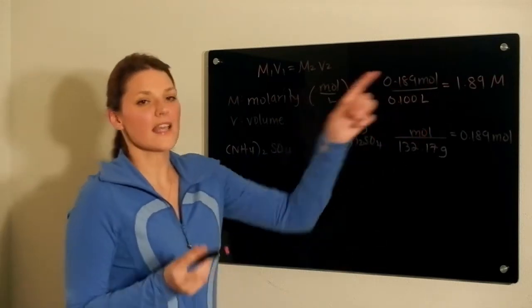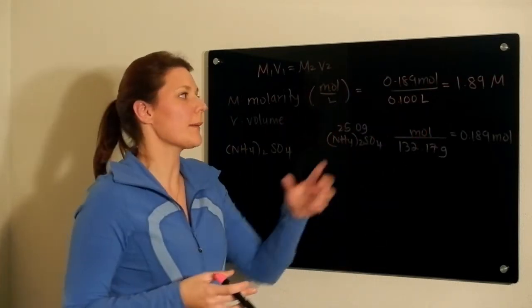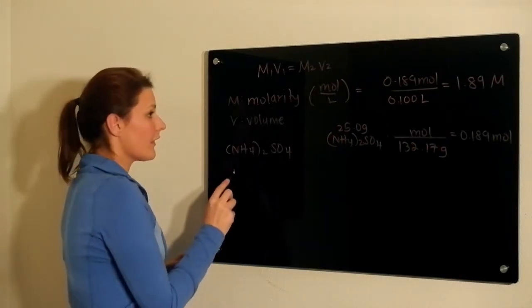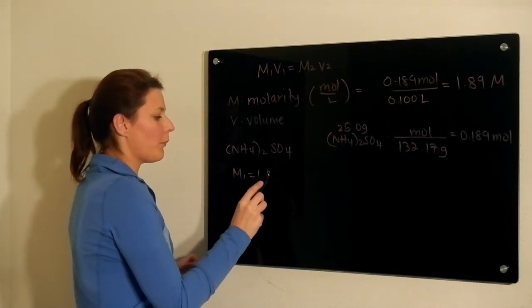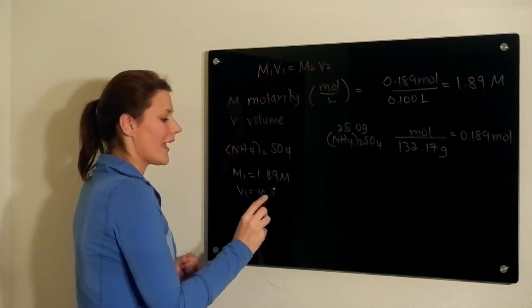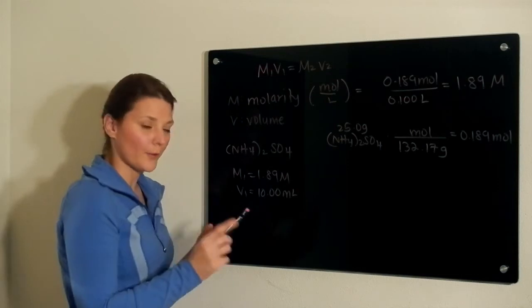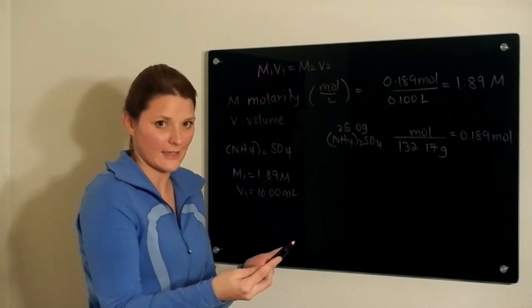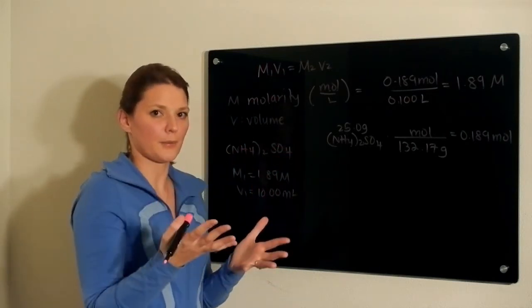We then take a 10 milliliter sample of this solution and dilute that one down, which means that M1 is equal to 1.89 molar and V1 is equal to 10 milliliters. Remember, we're taking 10 milliliters of the original solution and diluting that down, not the entire sample size.